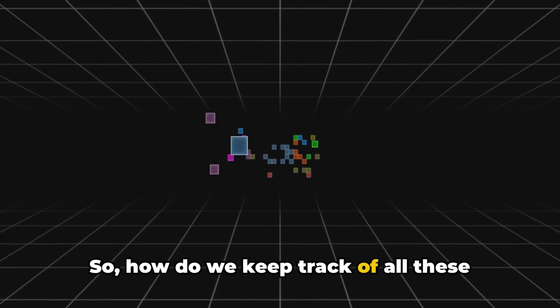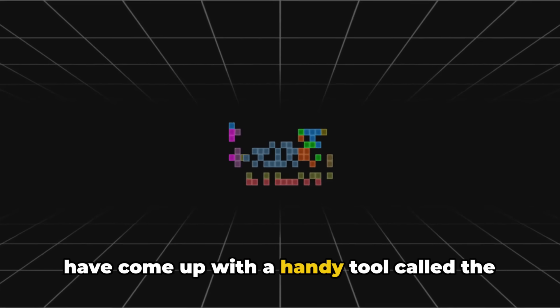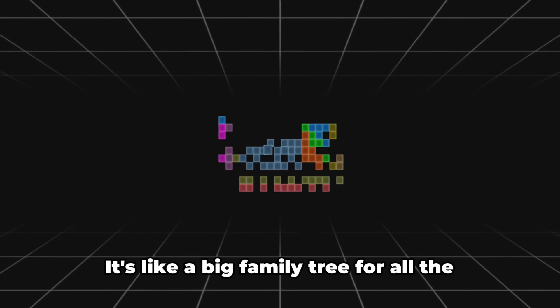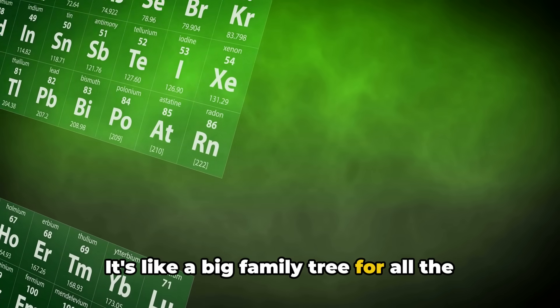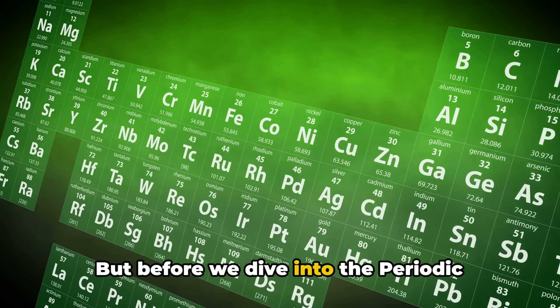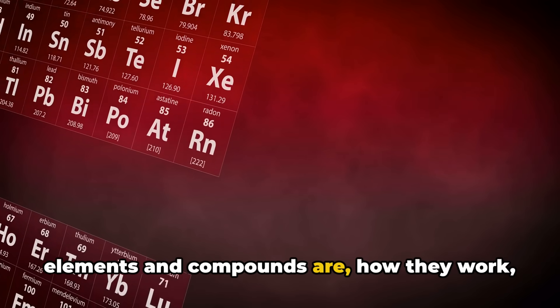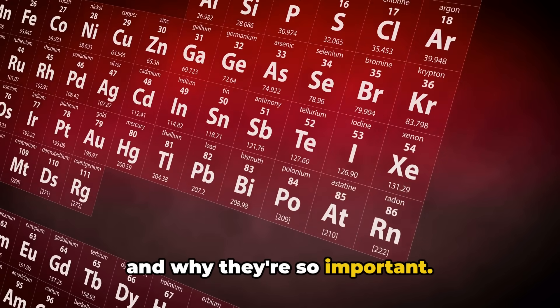So how do we keep track of all these elements and compounds? Well, scientists have come up with a handy tool called the periodic table. It's like a big family tree for all the elements, showing us how they're related and what they can do. But before we dive into the periodic table, let's take a closer look at what elements and compounds are, how they work, and why they're so important.